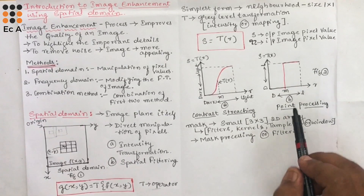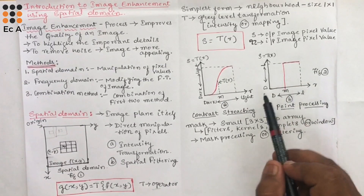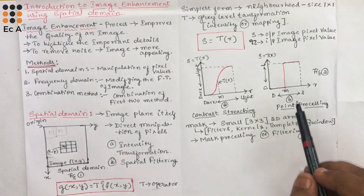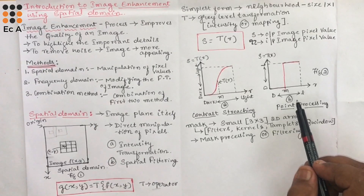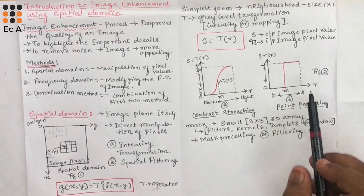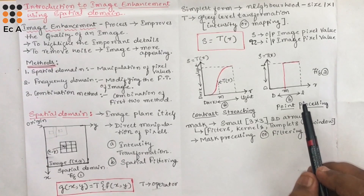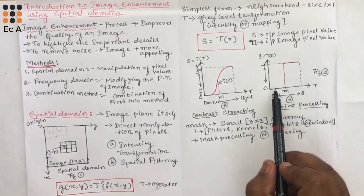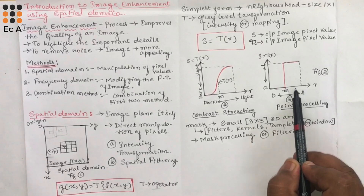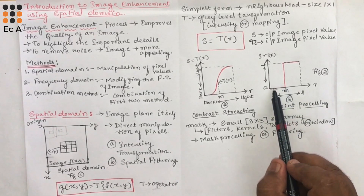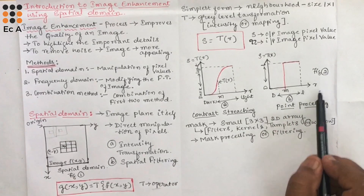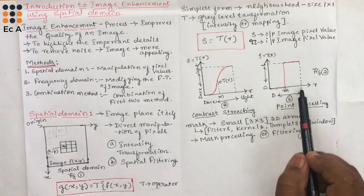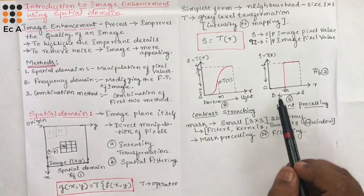Figure (b) shows the transformation T(r) that produces a two-level image, also known as a binary image. This is known as the threshold function. It is a simple but most powerful processing approach that can be formulated with gray level transformation. The transformation at any point in an image depends only on the gray level at that point. This technique is also known as point processing. The value of r below m will be darker and the value of r above m will be in the lighter region. That is why we call this a binary image or two-level image.